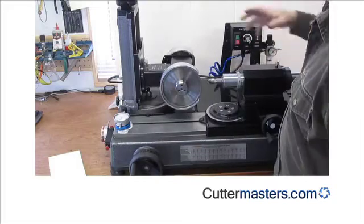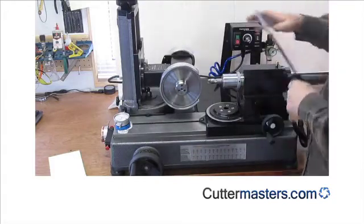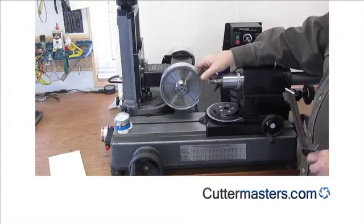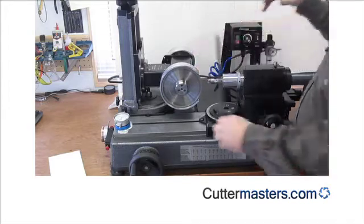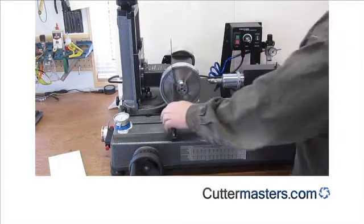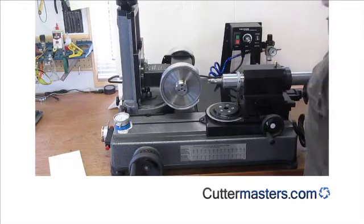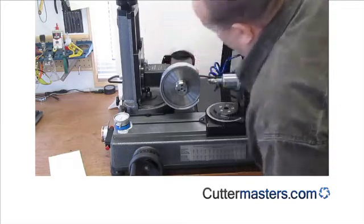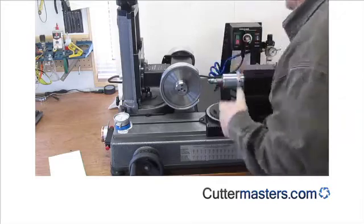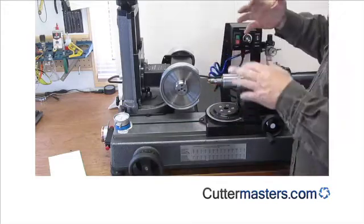So we set that to two degrees, and in this case here, we're going to plunge through this wheel because it's fast. We're tipping the motor up about half a degree or so, and you'll see why later. What it basically does is keeps the flute away from that cutting tip, gives you a little bit of clearance.